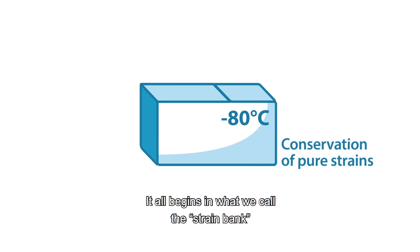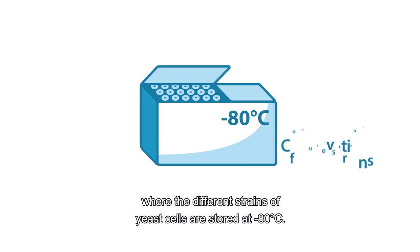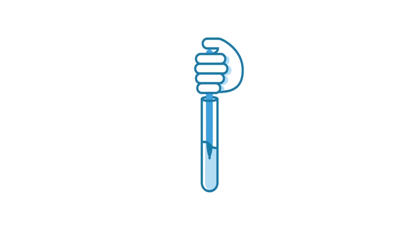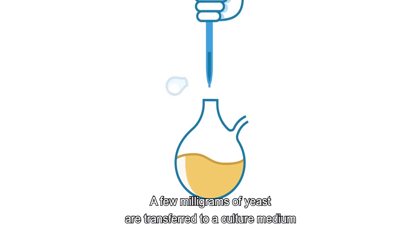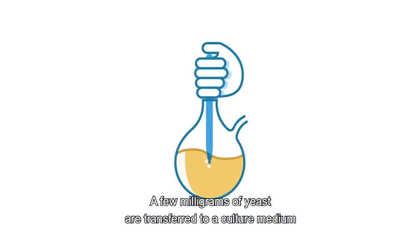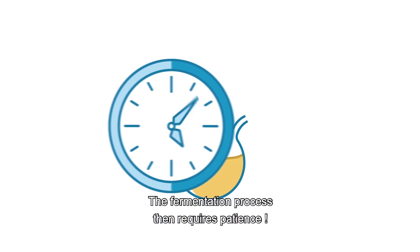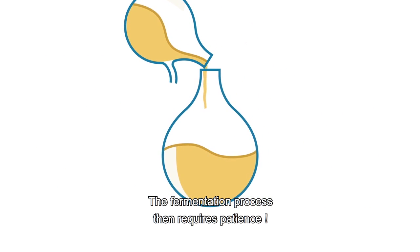It all begins in what we call the strain bank, where the different strains of yeast cells are stored at minus 80 degrees Celsius. An initial liquid culture is prepared in a tube. A few milligrams of yeast are transferred to a culture medium, and this is placed in an incubator at a favorable temperature. The fermentation process then requires patience.